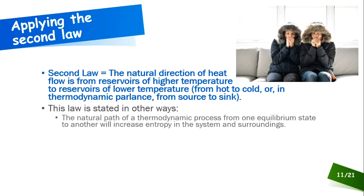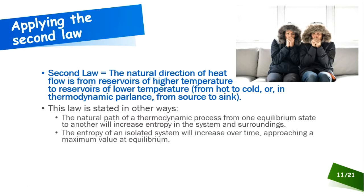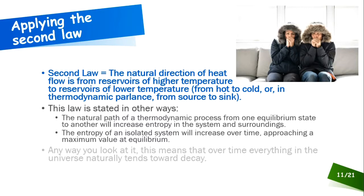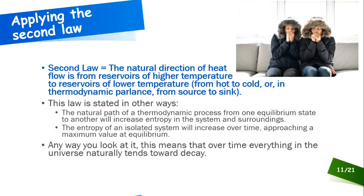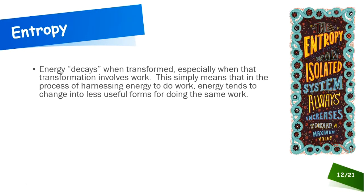For example: the natural path of a thermodynamic process from one equilibrium state to another will increase entropy in the system and surroundings, or the entropy of an isolated system will increase over time approaching a maximum value at equilibrium. Either way, heat travels naturally from hot to cold, and over time everything in the universe naturally tends toward decay — becoming more disordered and random.